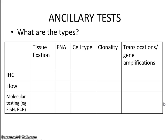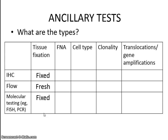So what are the types of ancillary tests that we often do? There are three main types: immunohistochemistry, flow cytometry, and molecular testing. In terms of tissue fixation, most of these can be done on formalin-fixed paraffin-embedded tissue, except for flow cytometry, which requires fresh tissue. This is why we often ask clinicians to send suspected lymphomas fresh. All three test types can be done on FNA or cytology material.